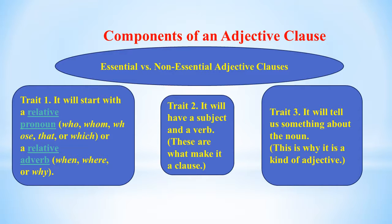Trait two: an adjective clause will have a subject and a verb — these are what make it a clause. Trait three: it will tell us something about the noun — this is why it is a kind of adjective. Quite often the relative pronoun is the subject of the clause. It is common for the relative pronoun to be omitted. For example: 'The carpets you bought last year have gone moldy' — here 'which' is omitted. 'The film which you recommended scared the kids half to death' can become 'The film you recommended scared the kids half to death.'